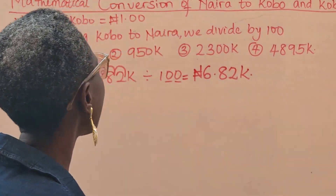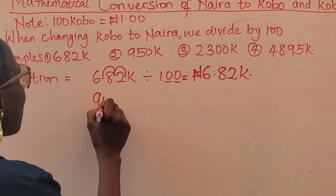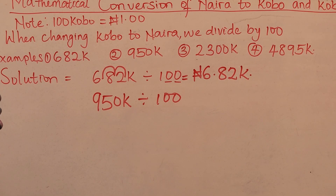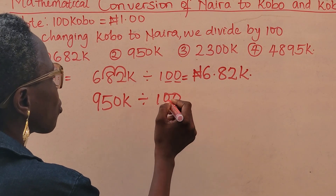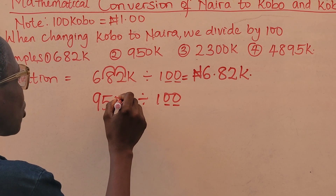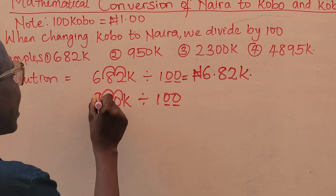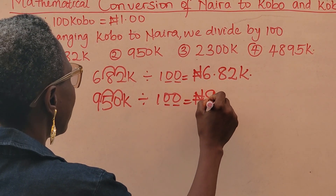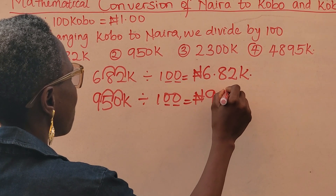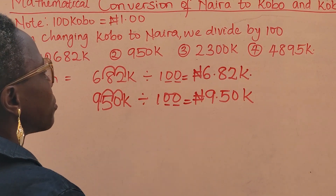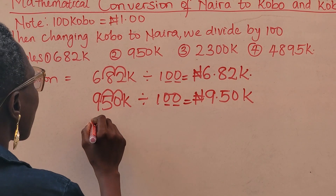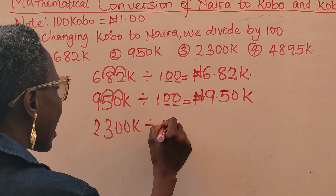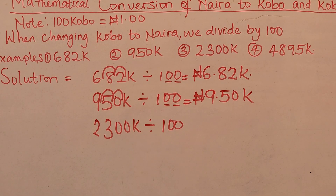The same thing applies to 950 kobo divided by 100. I move the decimal point twice — one and two. The decimal point is now between 9 and 5, so I write naira 9.50 — that is 9 naira 50 kobo.